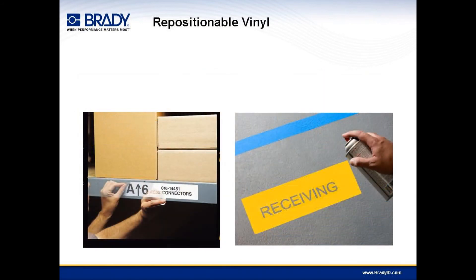Another great solution for stock labeling is the repositionable vinyl. This media sticks securely to racks and shelves, but can easily be peeled off and moved to another location when inventories are reorganized. The repositionable vinyl also finds practical use in stencil applications, as it provides close contact with the surface to be painted, but can easily be removed and even reused after the paint is applied.